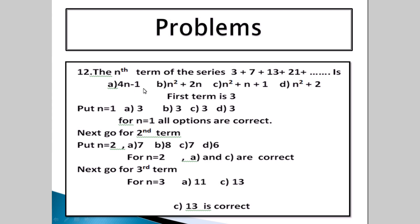Check the first term: n equals 1 gives 3. All options A, B, C, D give 3 for n equals 1, so we move to the second term. The second term is 7. Check each option for n equals 2: options A and C give 7, so A and C remain candidates.